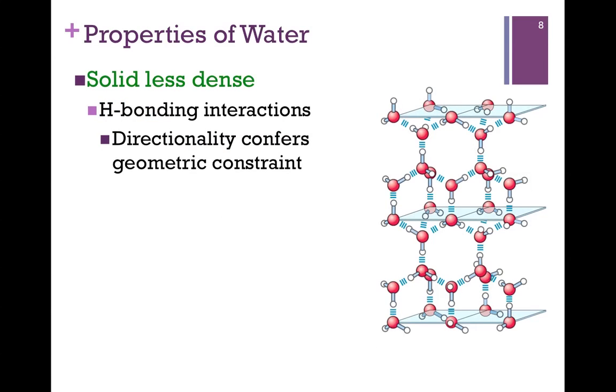Now, because of the hydrogen bonding interactions of water, it also means that water in the solid is less dense than the liquids. Recall that when we form those hydrogen bonds, we want that linear arrangement, and so there's a geometric constraint on how many that we can form and the order in which they form. So, in the solid, we have this very cage-like structure, a very porous molecule.